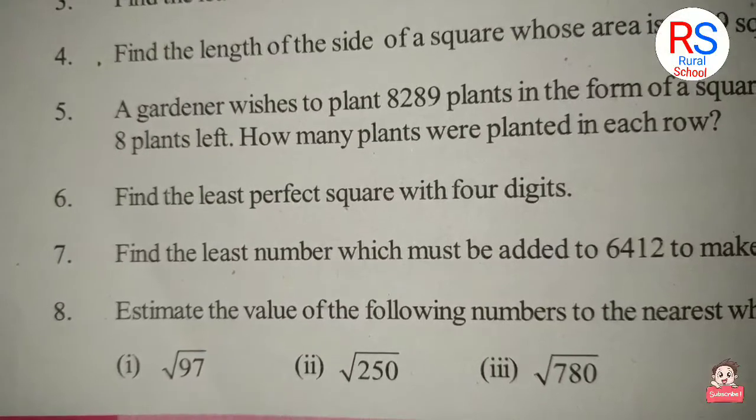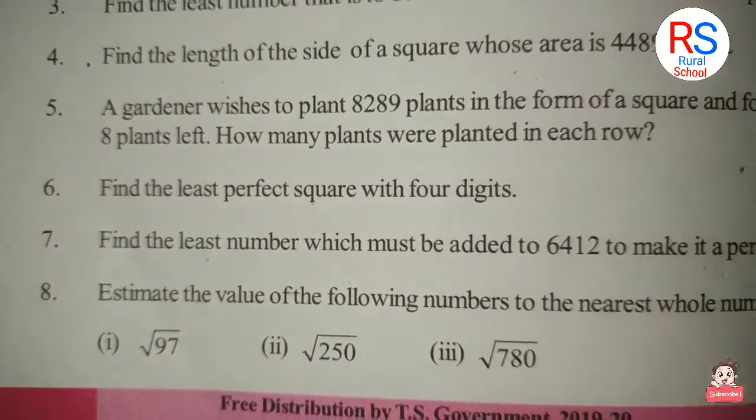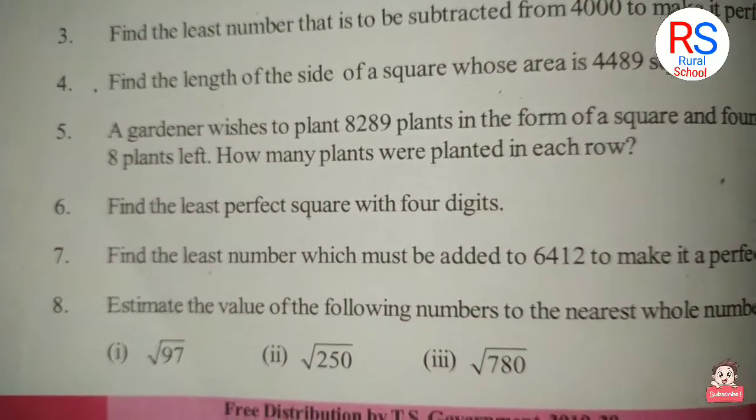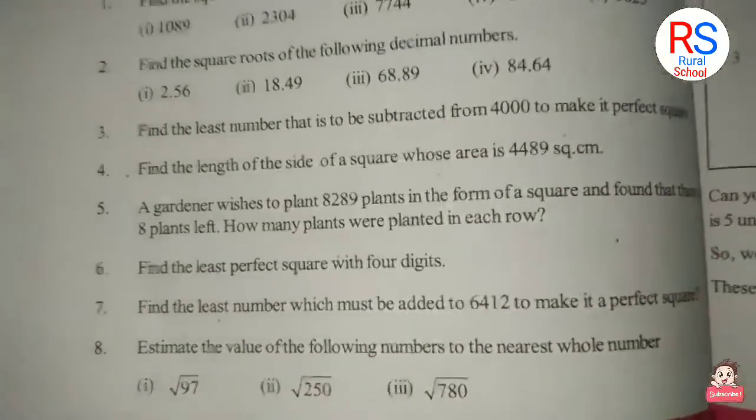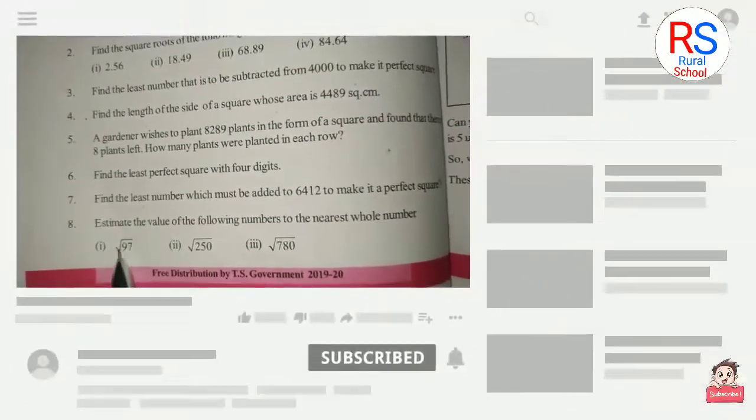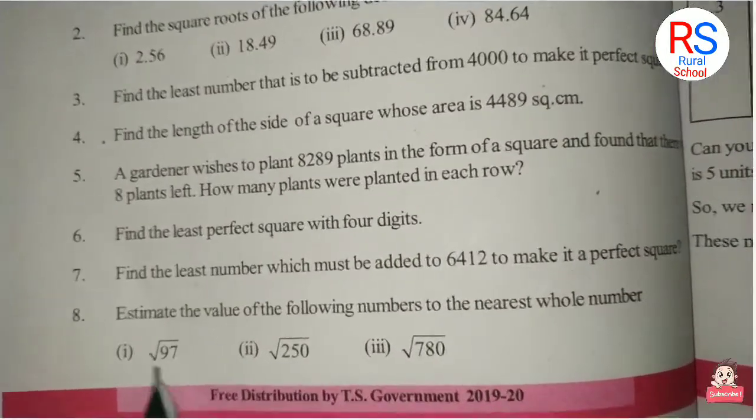Next, estimate the value of the following numbers to the nearest whole number. First: √97. This is the nearest whole number calculation.